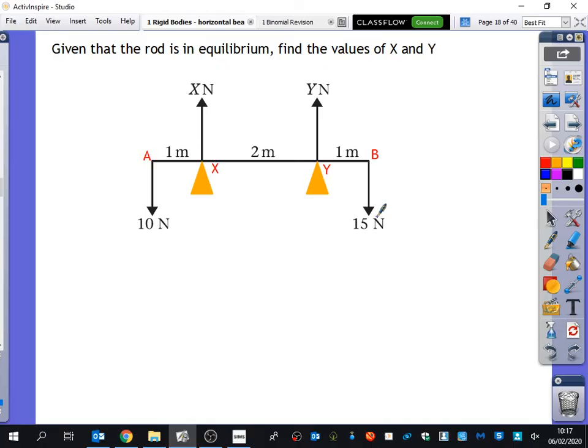So there's a few different things that you can spot. Very quickly, if we resolve up and down, and I always think this one's a useful one to start with, you can just see that X plus Y is equal to 25. Zuba, have you got any suggestions of where's a good place to take moments about? Let's take moments about X. If you take moments about X, X is zero away from it, so you won't even have to include X in that particular bit.